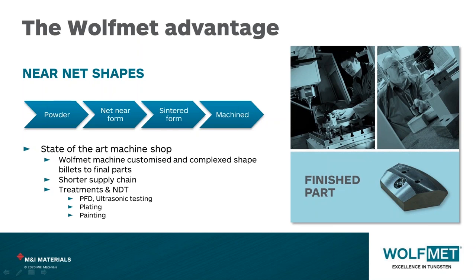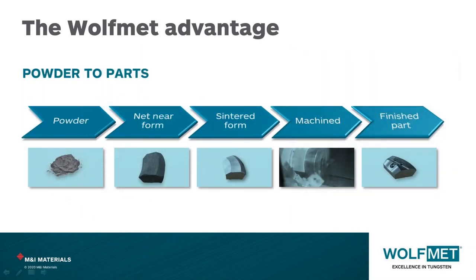Wolfmet can also offer solutions to customers whose parts require treatments following machining — for instance non-destructive testing processes such as penetrant flow detection and ultrasonic testing, nickel plating, painting, and priming requirements. We have a range of approvals from aerospace customers that can accommodate most requirements. In summary, when parts and production schedules allow it, Wolfmet can optimize the production process for the most efficient use of powder, with minimal steps, efficient powder use, and the shortest possible machining times.